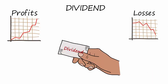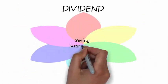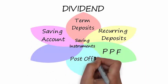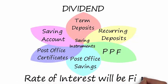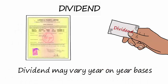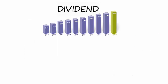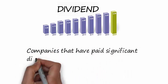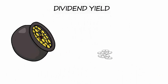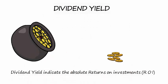If the company makes profit, that will be your profit, and in case of loss you will be at loss. The profits of the company may be distributed to the shareholders as dividend. In case of saving instruments such as saving bank accounts, term deposits, recurring deposits, PPF, and post office savings schemes, the rate of interest is fixed in advance. But in case of shares, dividend may vary year on year based on earnings of the company and management decisions. Normally only profitable companies pay dividends, and companies that have paid significant dividends for an extended period are considered good companies.